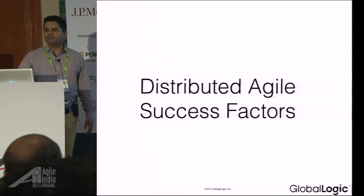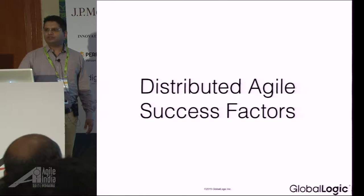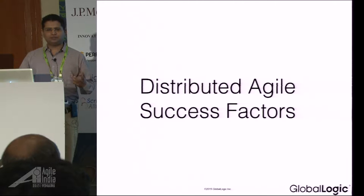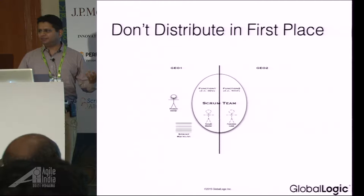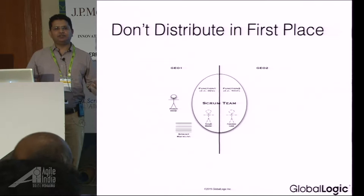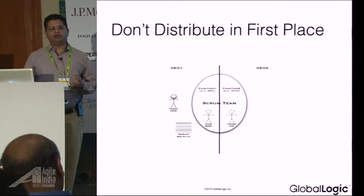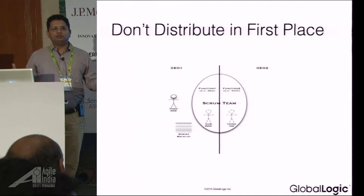Distributed Agile success factors — many of us are programmers here, and one of the first principles in distributed programming is: don't distribute at all. So if you can avoid the distributed way of working, that is the first thing you want to consider. As soon as you start introducing more distribution, it comes with a lot of challenges, and the ROI takes a little time to materialize. First and foremost, try to see if you can avoid distribution at all.